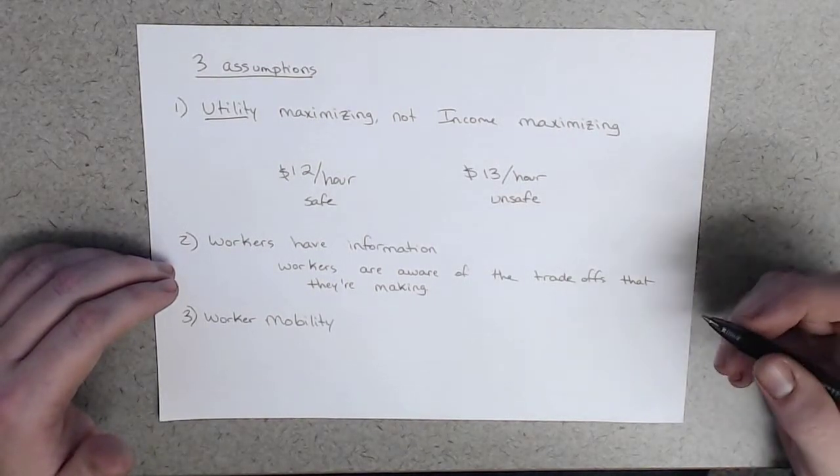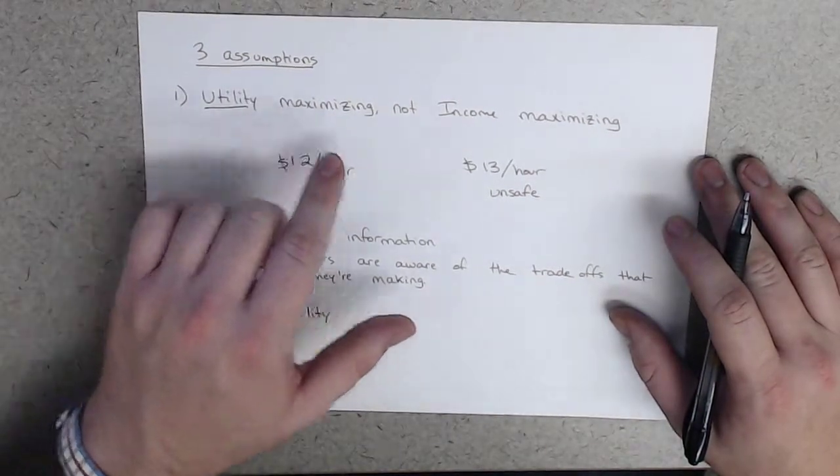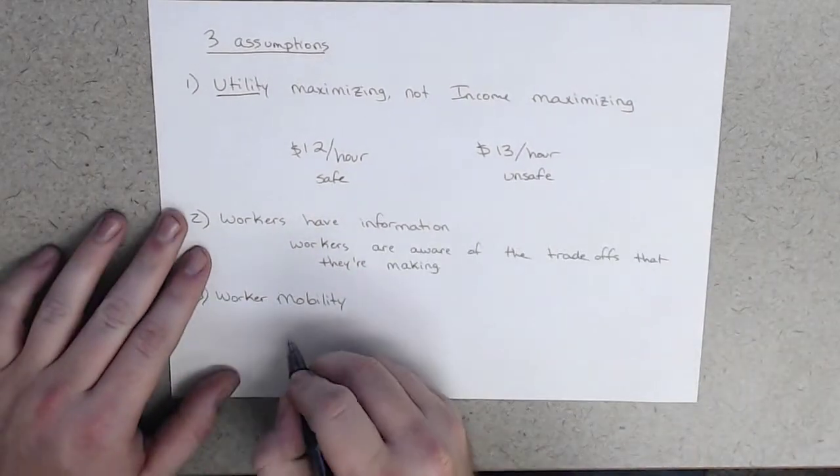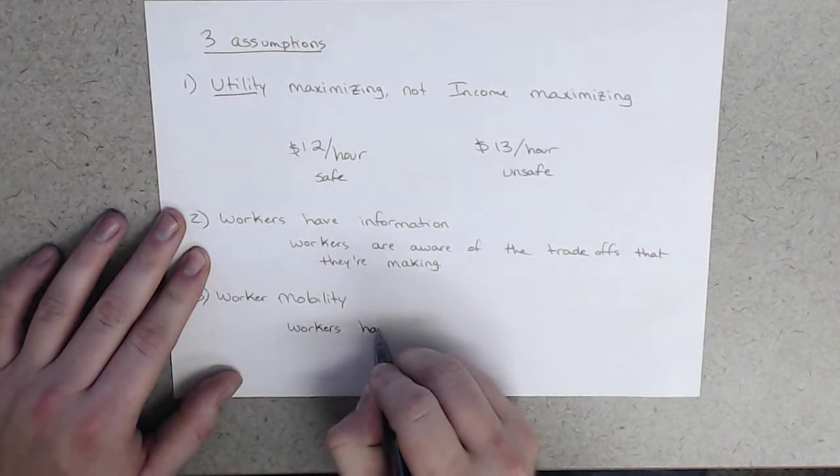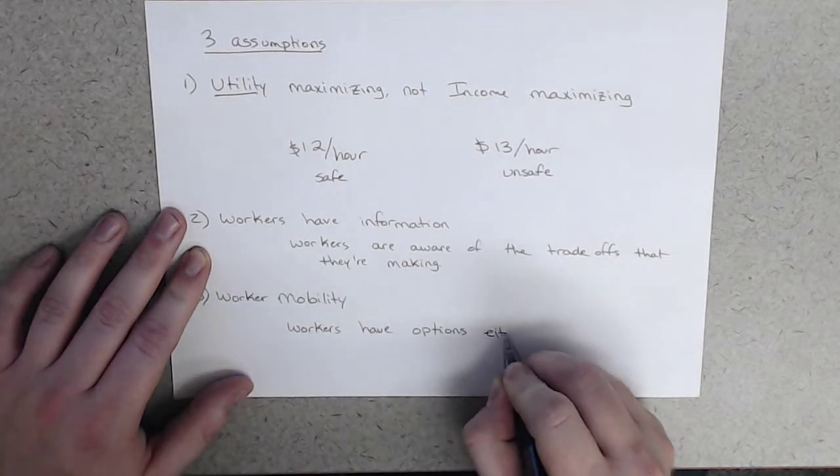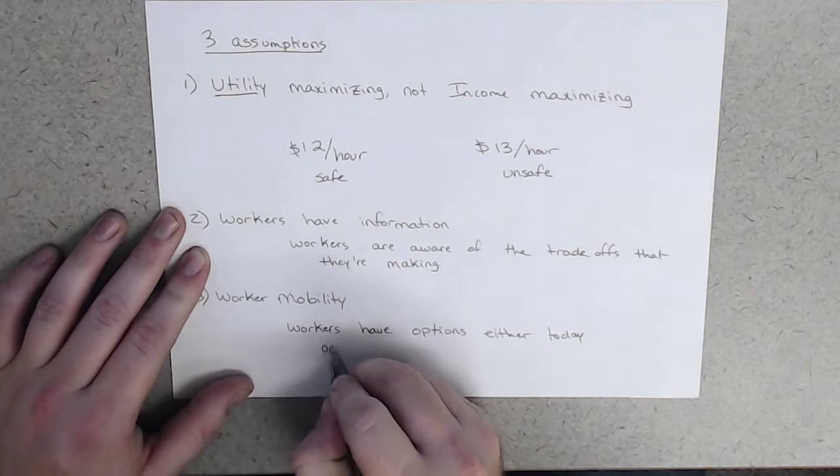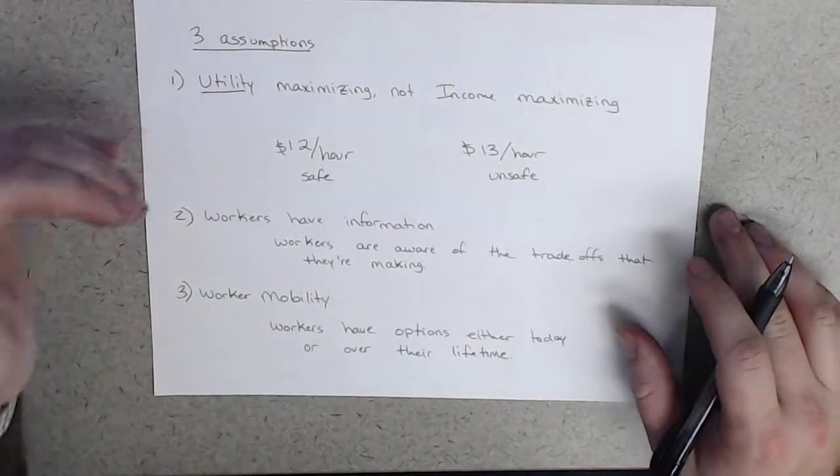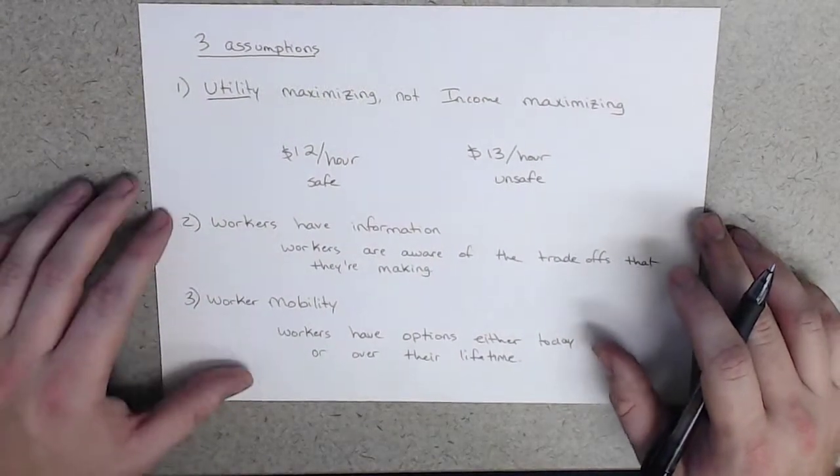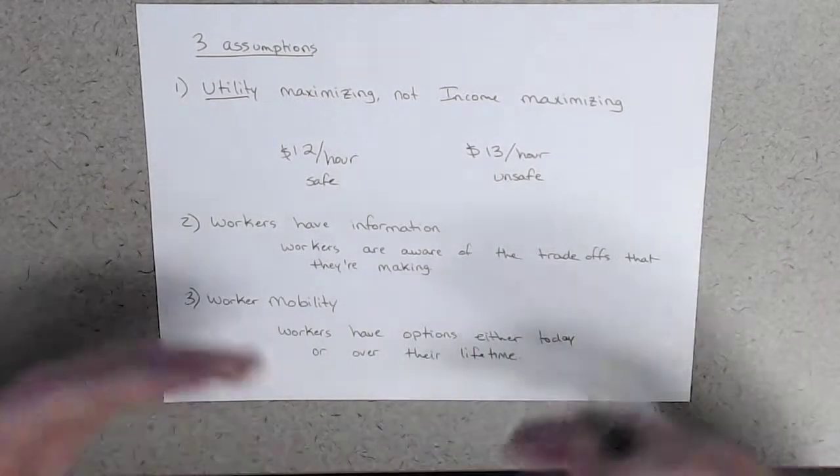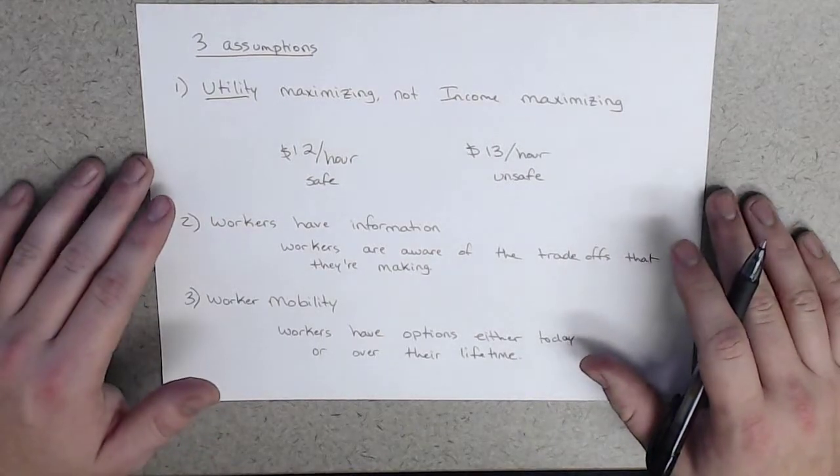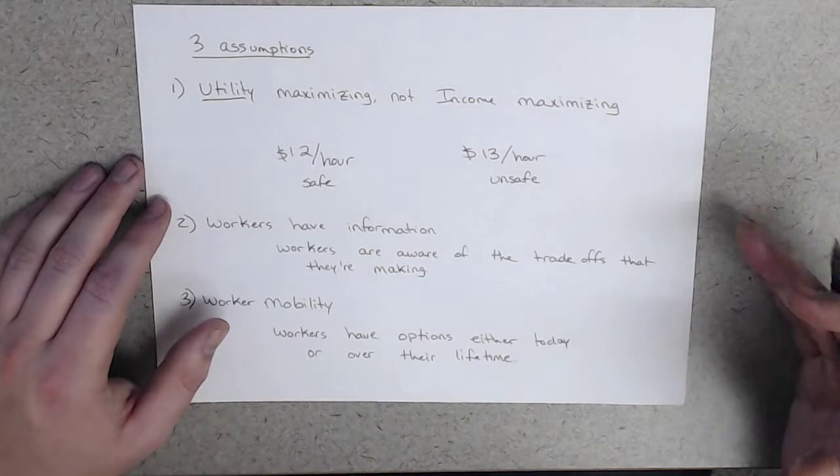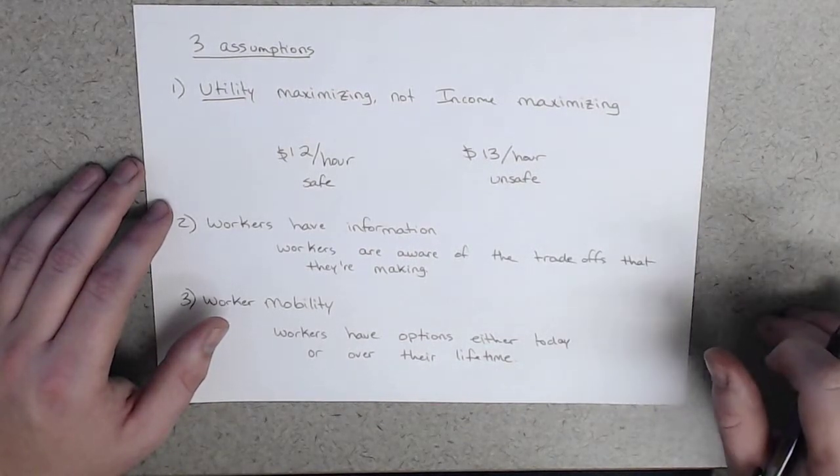We make these assumptions: we assume that people are utility maximizing and not income maximizing, we assume that they know about the decisions that they're making, and we assume that they have options, either today or over their lifetime. If these three assumptions hold, what we should expect to see are workers who value safety highly working in safe working environments, and workers who value income highly working in higher income but potentially less safe, dirtier, or less pleasant working environments.